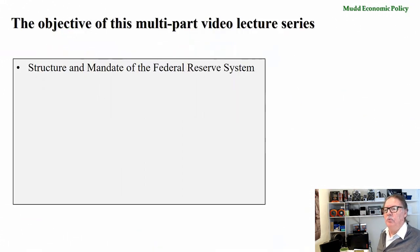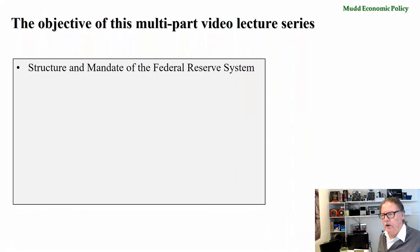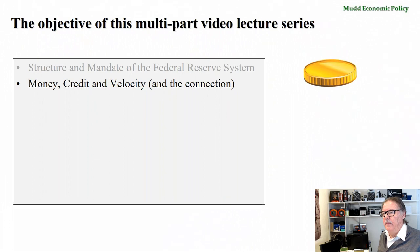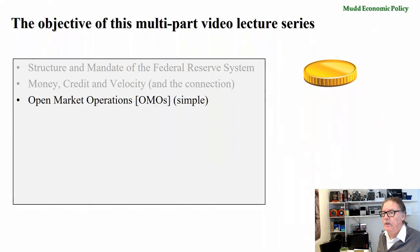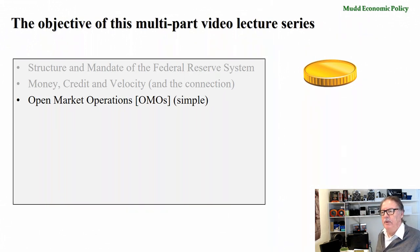Here's what we're going to try to accomplish in this multi-part video lecture series. First, we're going to start today with the structure and mandate of the Federal Reserve System. Then we're going to explore money, credit, and velocity, and the connection between them. Then, the most important lecture in this series — the second lecture — will be a discussion of open market operations at a simple introductory level.